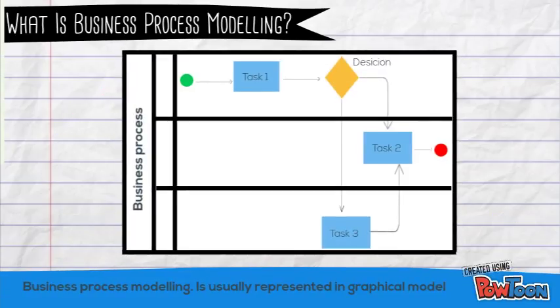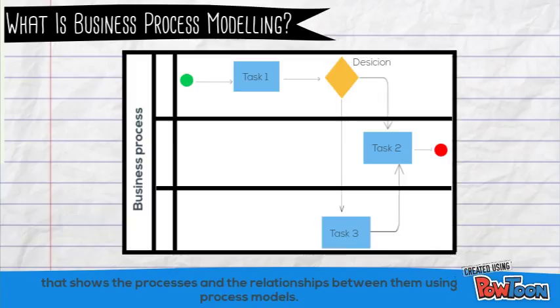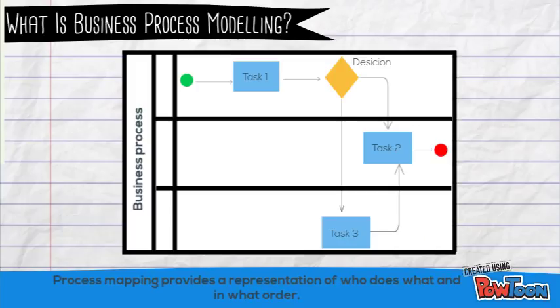Business Process Modeling is usually represented in graphical models that show the processes and the relationships between them using process models. Process Mapping provides a representation of who does what and in what order.